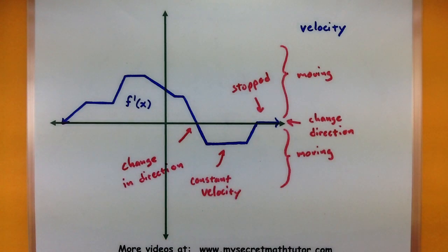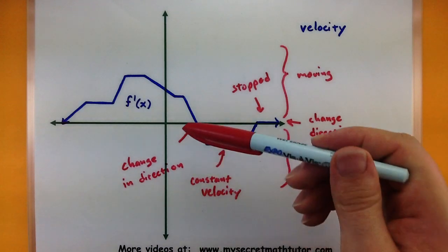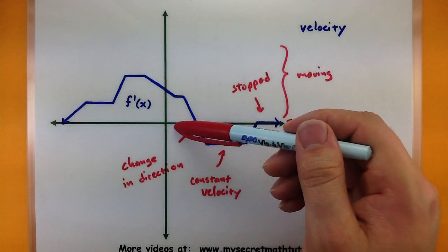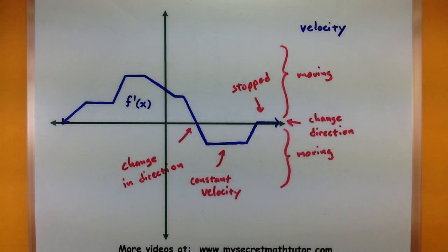Okay, so depending on how great our velocity function is, or how great and negative it is, it tells us how great our velocity is. So the further up we go, the faster we're going.